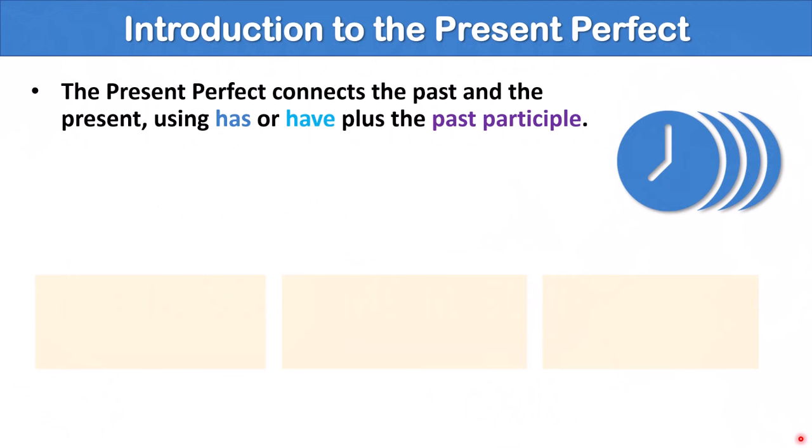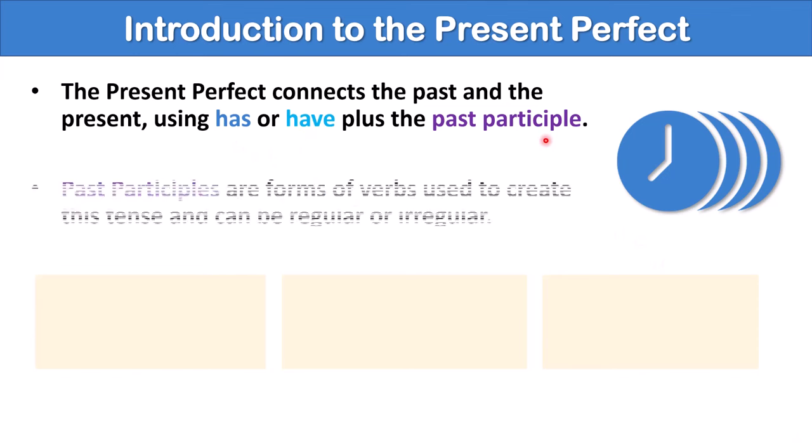The present perfect is a verb tense, and it connects the past and the present. We form the present perfect with has or have plus the past participle. And past participles are forms of verbs used to create this tense, and they can be regular or irregular.